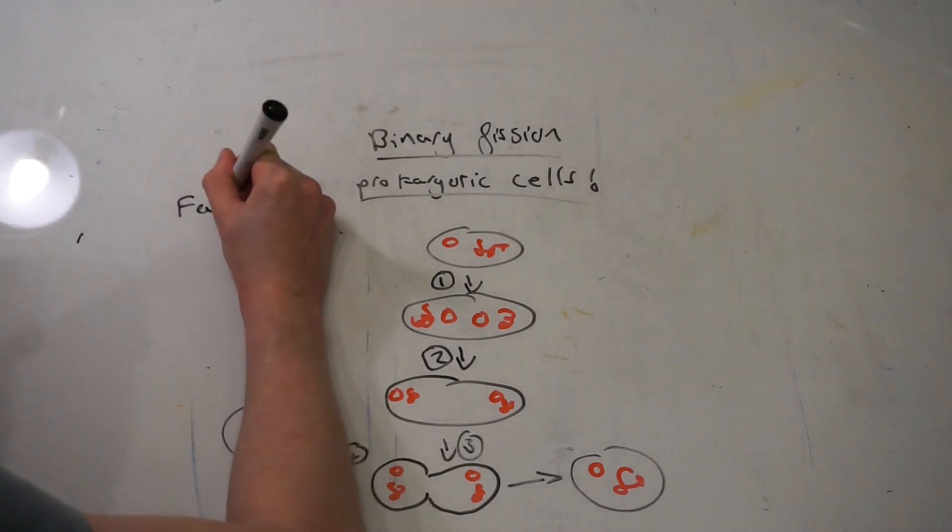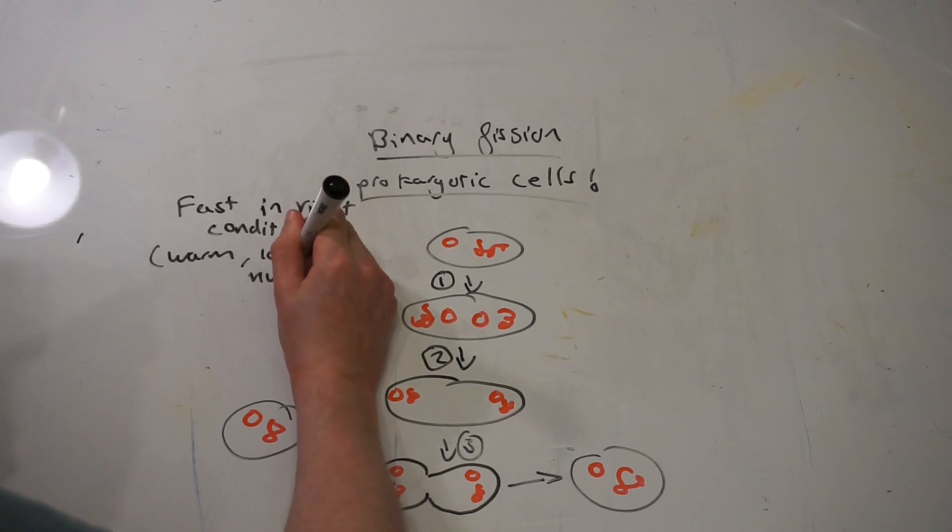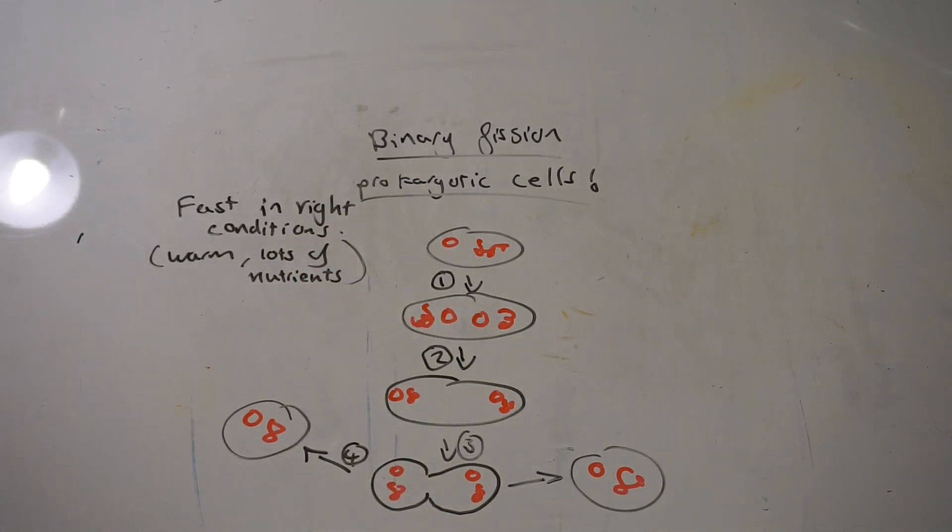They move to opposite poles, they split, and then two new daughter cells are formed. I'll go over that in a little bit more detail.